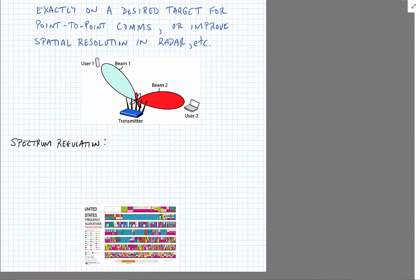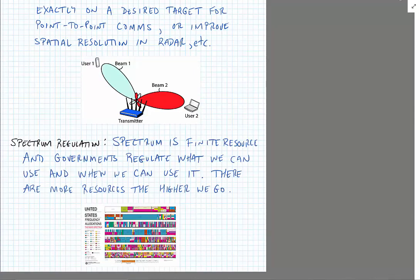Another important thing to consider is spectrum regulation. So in the spectrum regulation consideration we consider that spectrum is a finite resource, meaning that not everybody can use the same frequency at the same time, and so governments regulate what we can use in terms of the bandwidth and when we can use it. And generally there are more resources the higher we go in frequency.